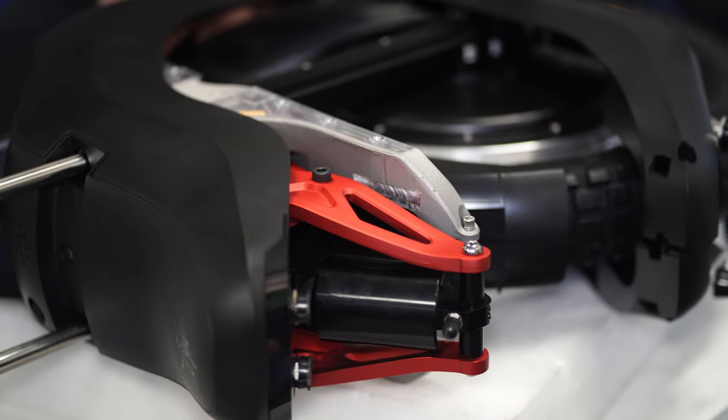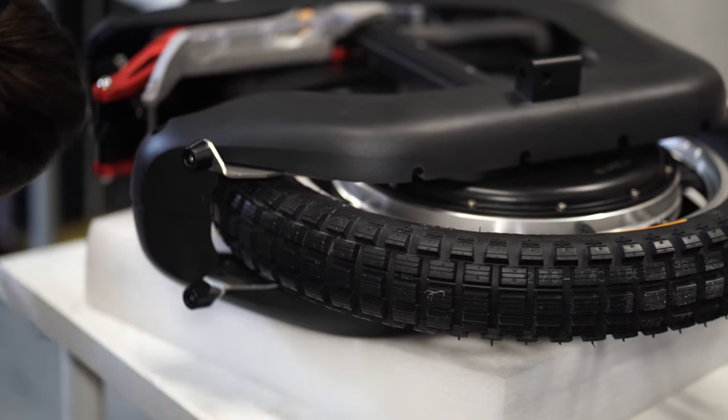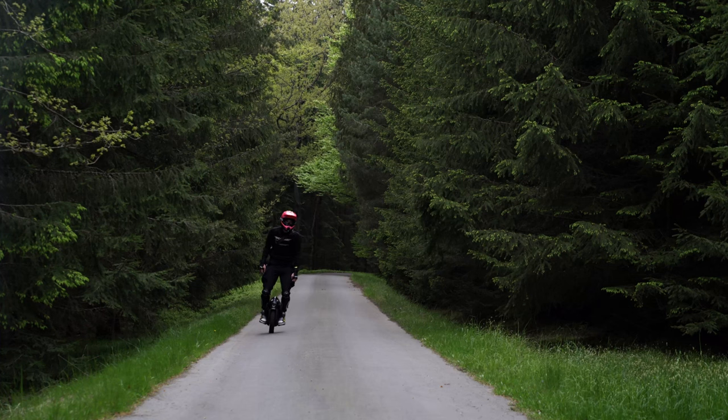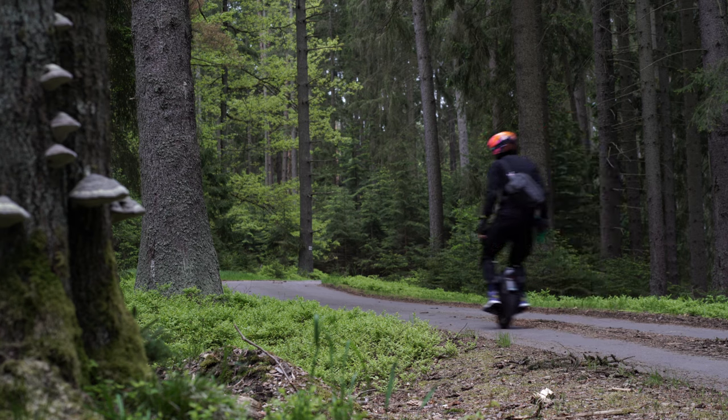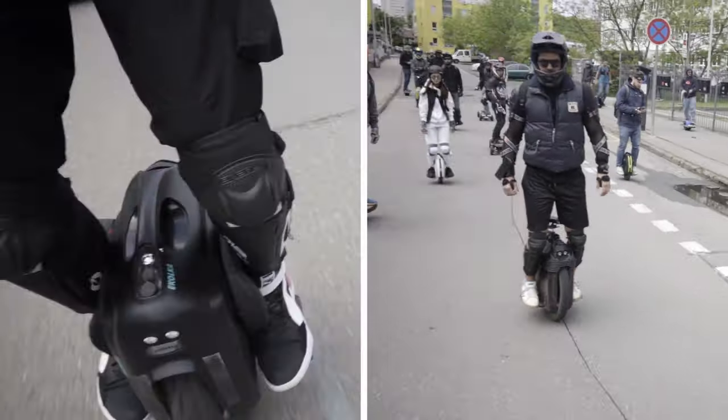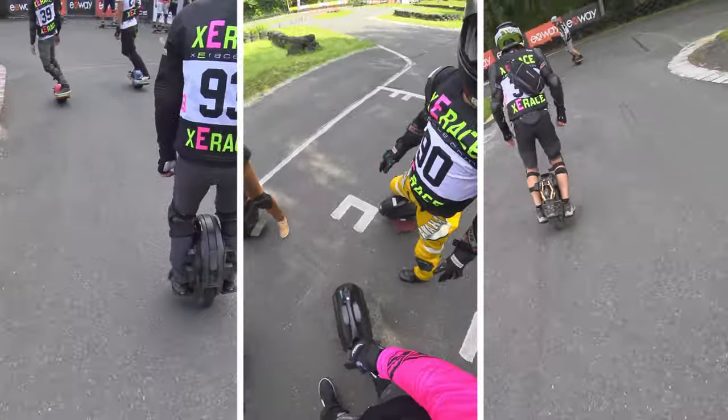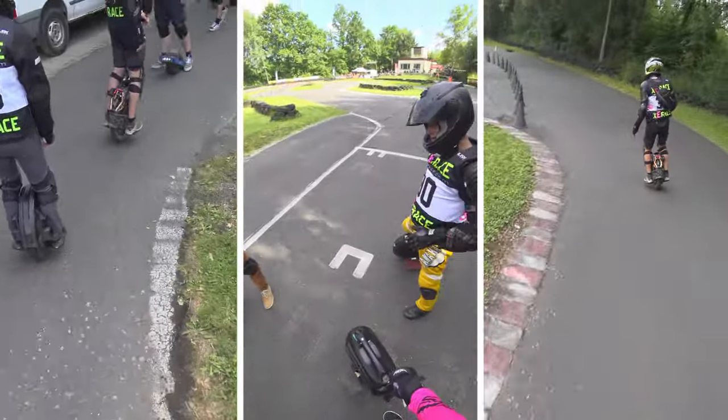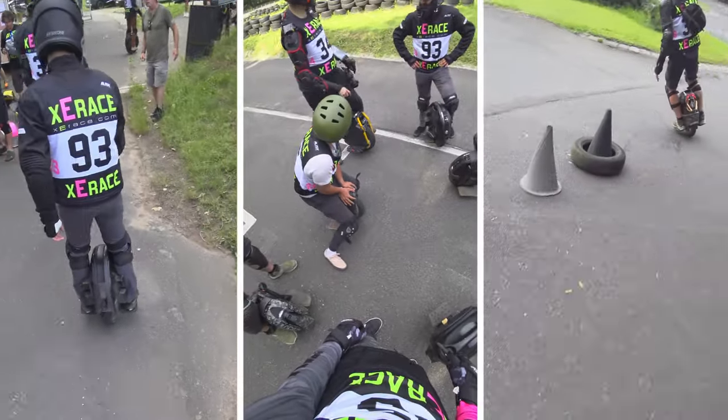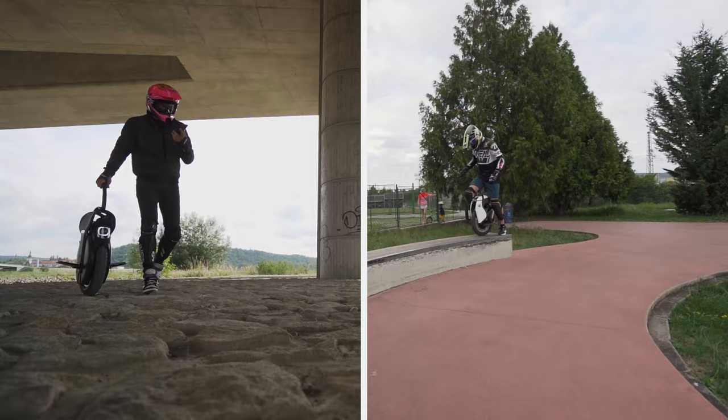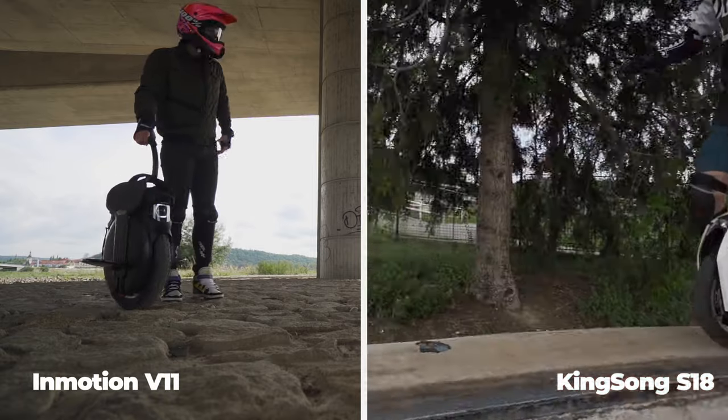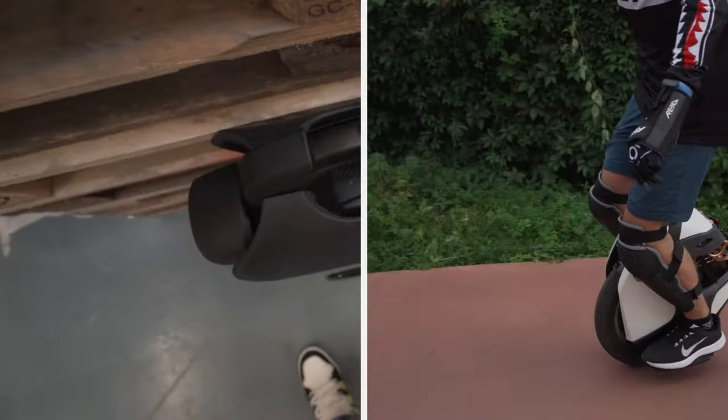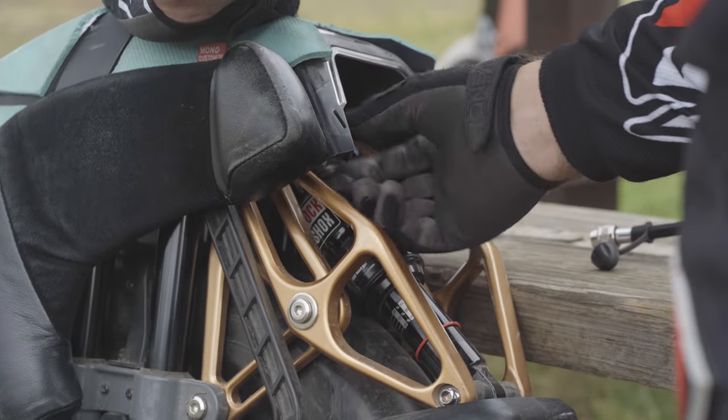When you take the Begoad Hero out of the box, the first thought that comes to mind is that this device is unlike other Begoat electric unicycles. Over the years, the brand has accustomed us to a specific design code that can be found across the entire line of devices, from ACM to Monster Pro. The only model that stood out from this range was the Gotway Nikola. Of course, this is Kingsong S18.